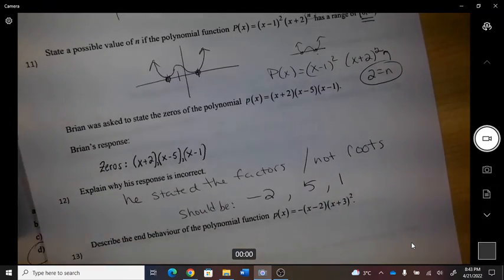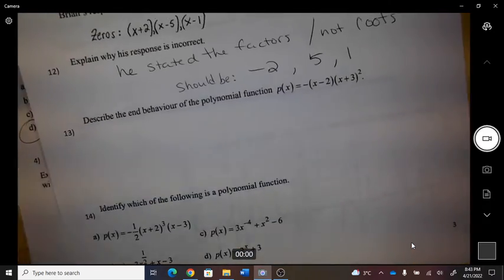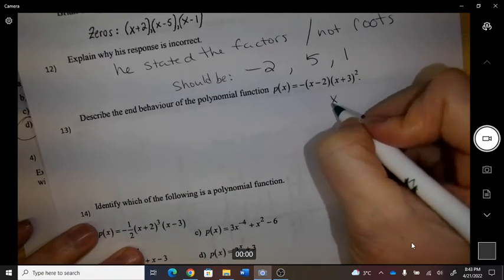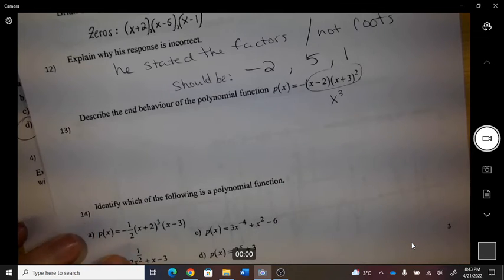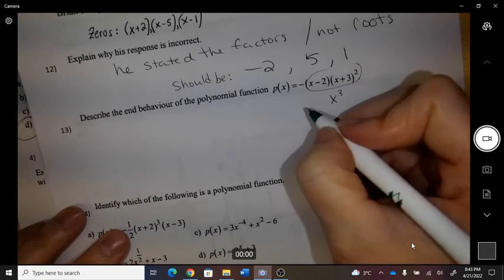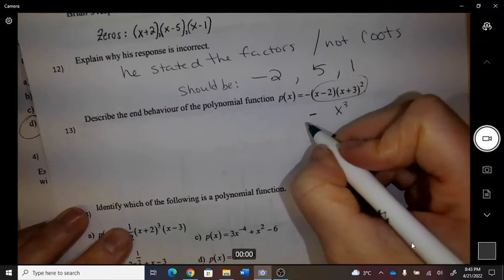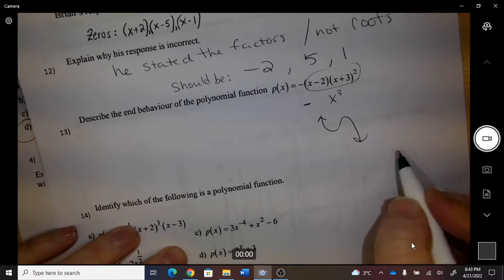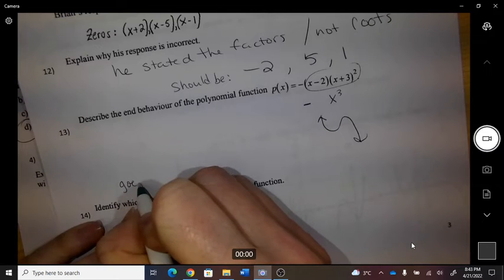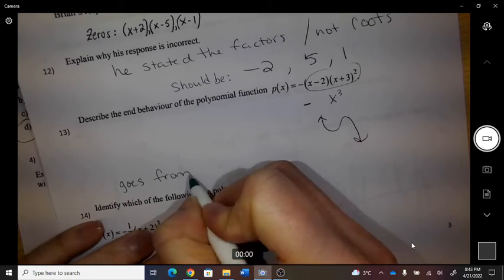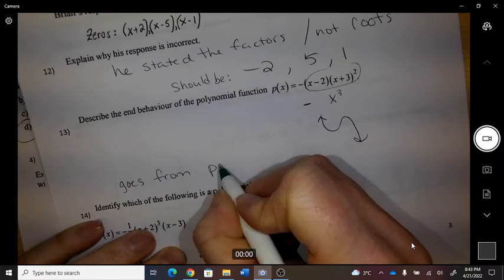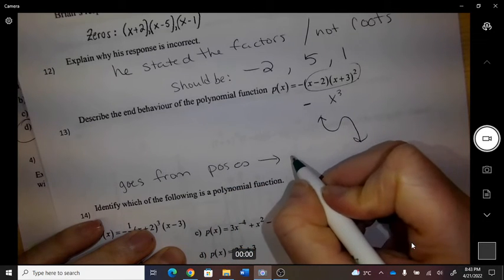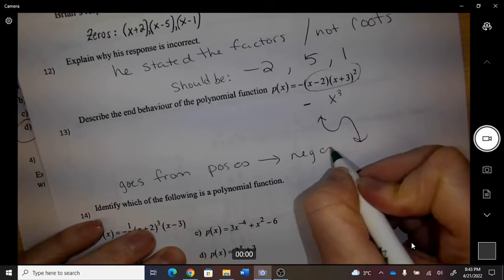So he was mixing up what a root was versus what a factor was. Describe the end behavior of this. So it's an x³, all the degrees put together, and there's a negative in the front, so it will look like that. So if you want to describe it, it goes from positive infinity and heads towards negative infinity.